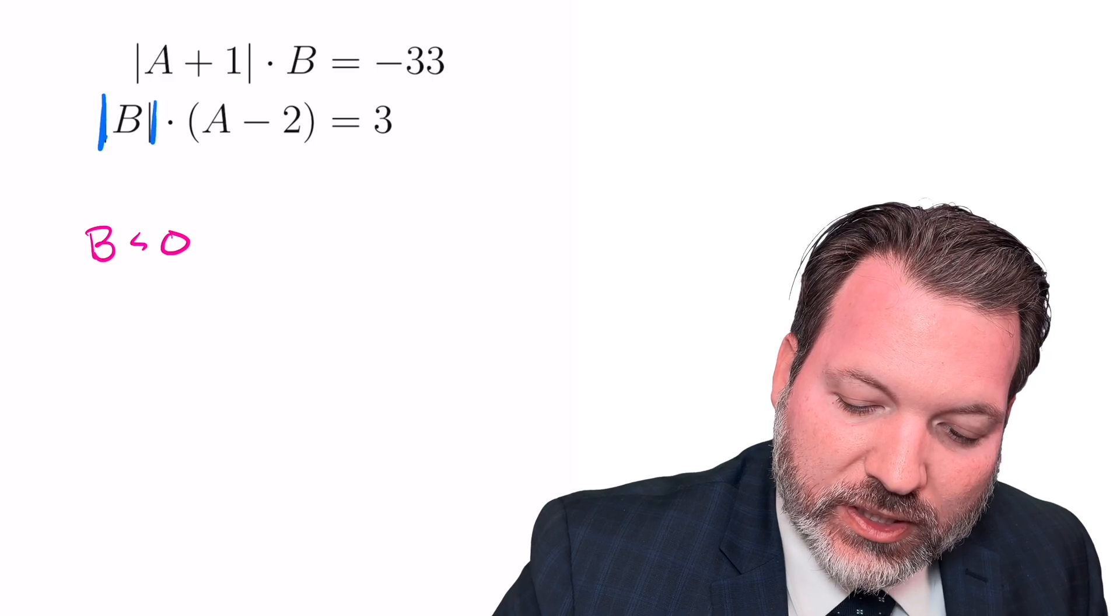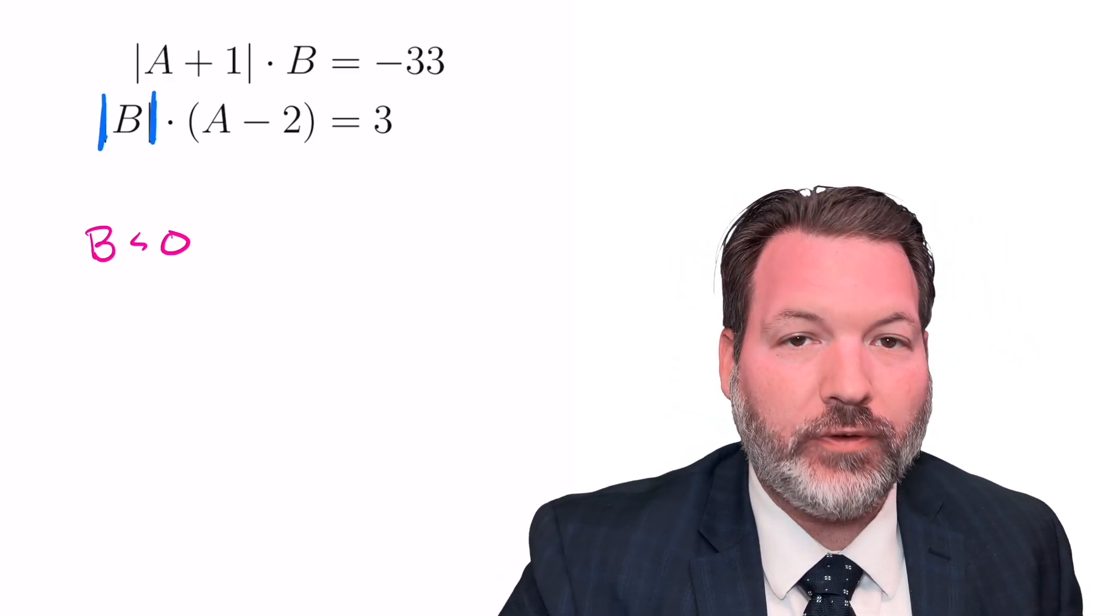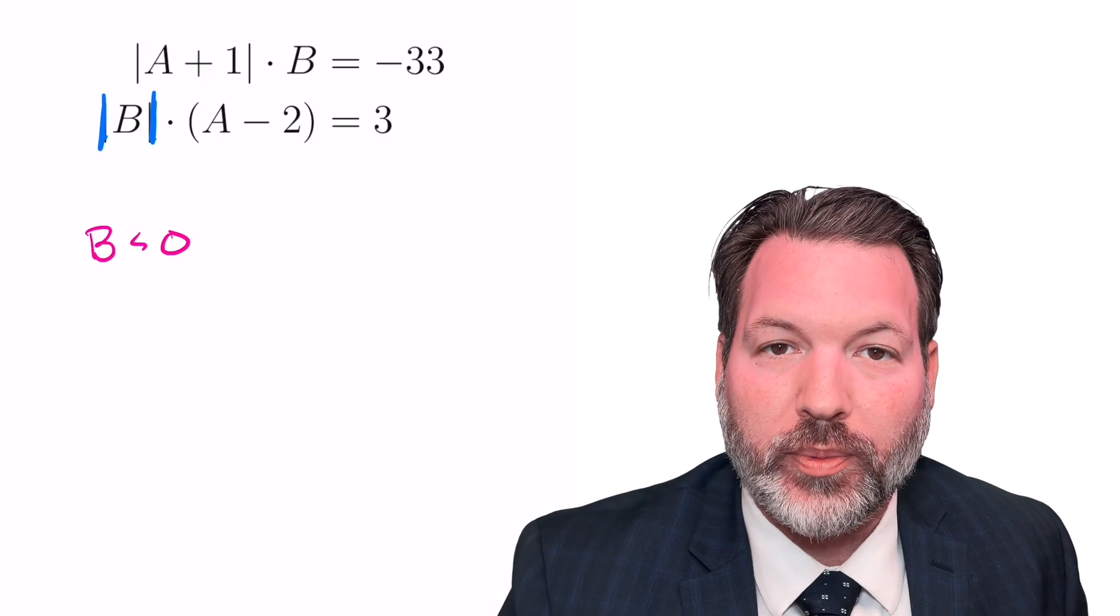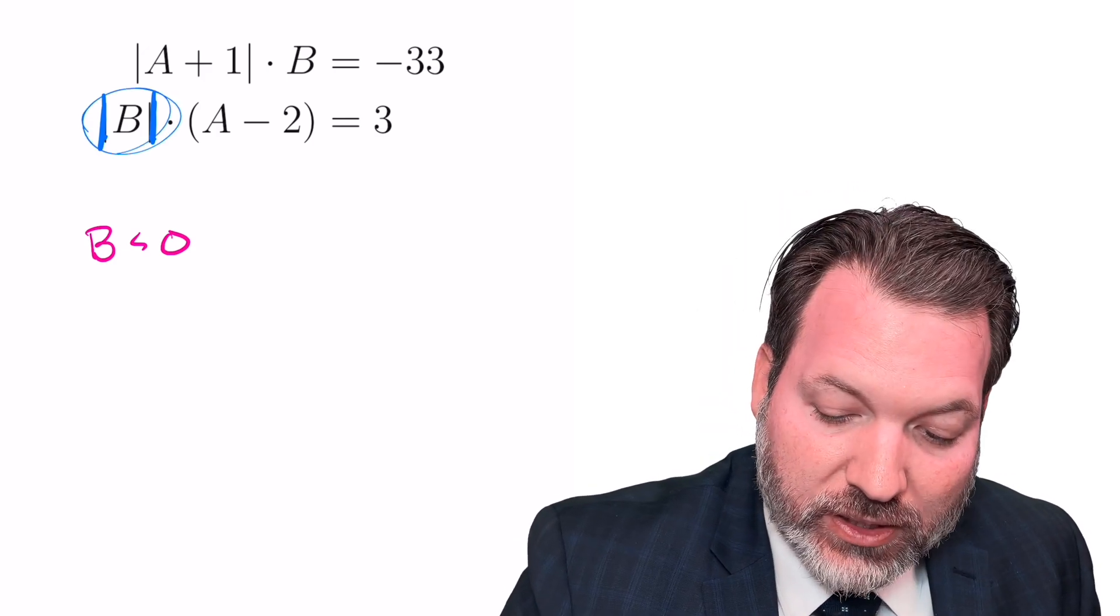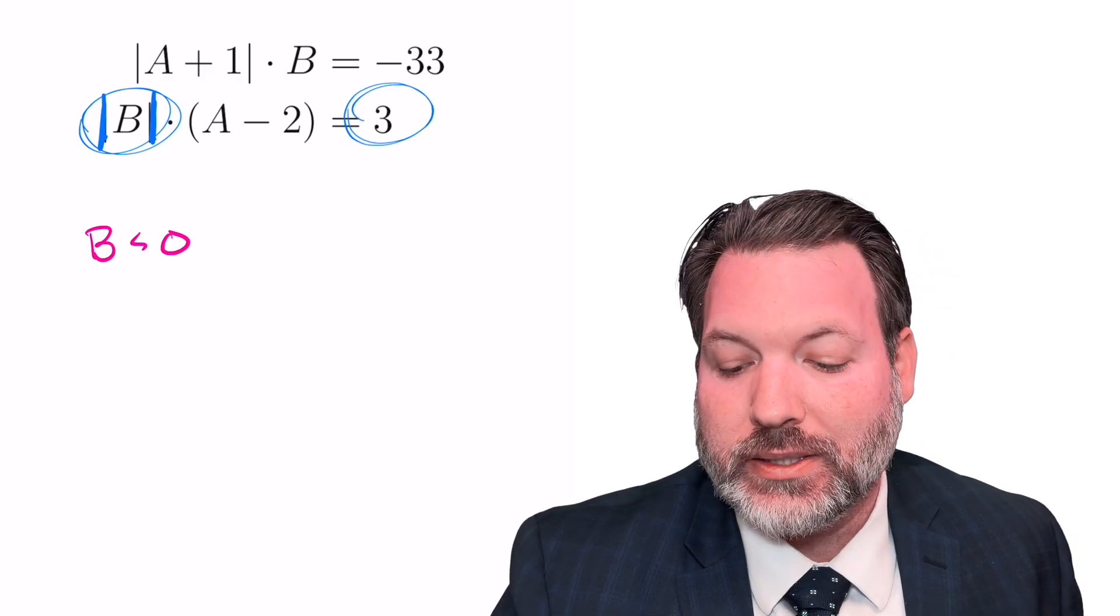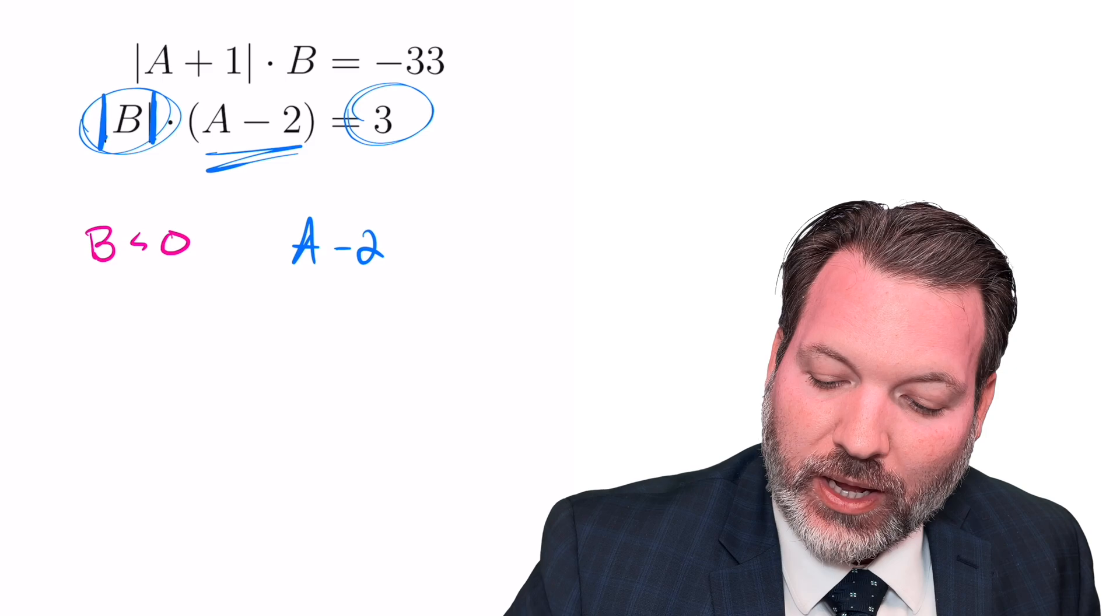Similarly, in the second equation, the absolute value of b, which we know b itself is negative, but the absolute value will be positive, times a minus 2 equals 3. Well, if this is positive and my result is positive, a minus 2 must also be positive.